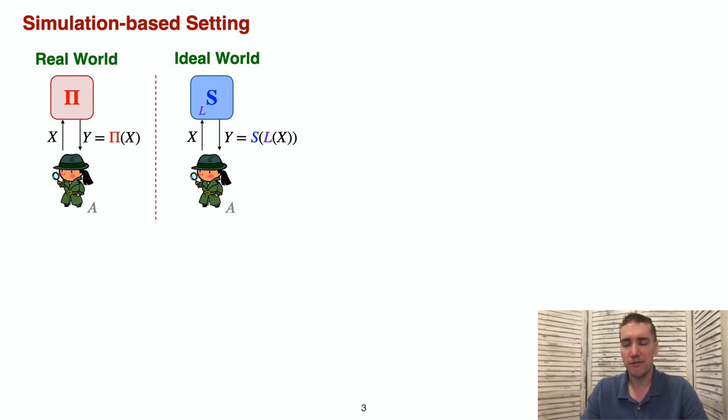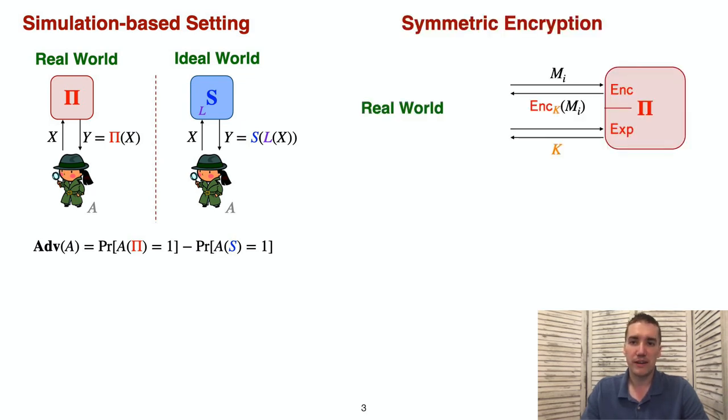In such a setting, we consider the difference between the real and an ideal world. In the real world, the attacker makes queries to some cryptographic construction pi. In the ideal world, its queries are instead answered by a simulator, which is given leakage about the queries. The advantage of the adversary is defined as the difference in probability that it outputs one in these two worlds. In our motivating examples, symmetric encryption came up as a small component of an implicated protocol such that the attacker could interact with it in two ways.